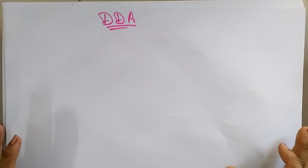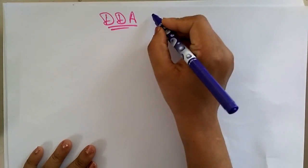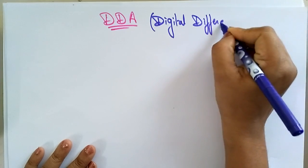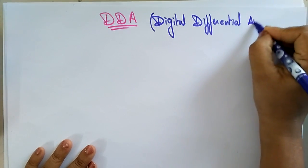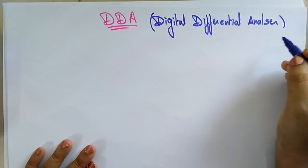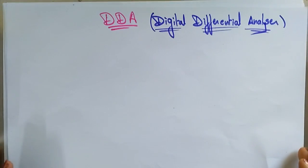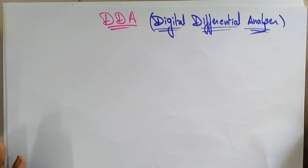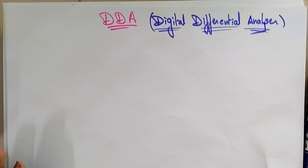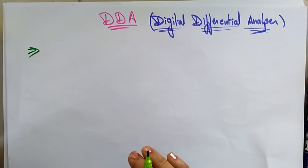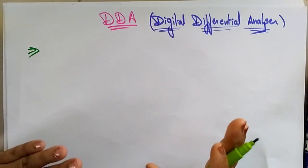Welcome back students. Let's continue with computer graphics. The next topic is the DDA — that is Digital Differential Analyzer. This algorithm is used to draw a line segment in the system. It is a line drawing algorithm and we call it a scan conversion method.